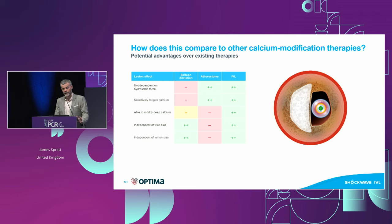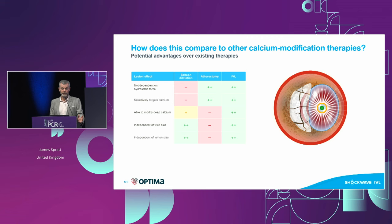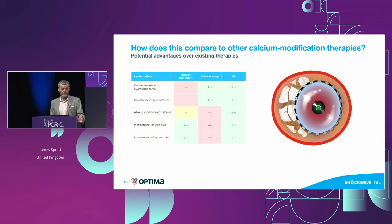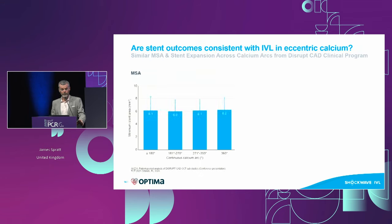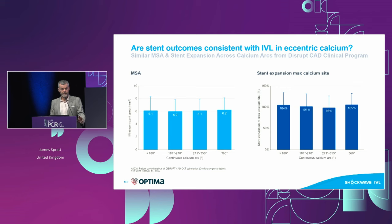High-res CT of balloon versus lithotripsy shows the mechanism of action is distinctly different, resulting in a much more profound modification of calcium. Compared to other therapies, we're not using barotrauma — we don't have to go to 50 atmospheres. The optimum inflation pressure is between two and four atmospheres, and it selectively targets calcium. For eccentric calcium, this is absolutely critical — targeting deep wall calcium independent of wire bias and lumen size. Data from pooled analysis shows the same stent area and expansion irrespective of whether calcium is eccentric or concentric.